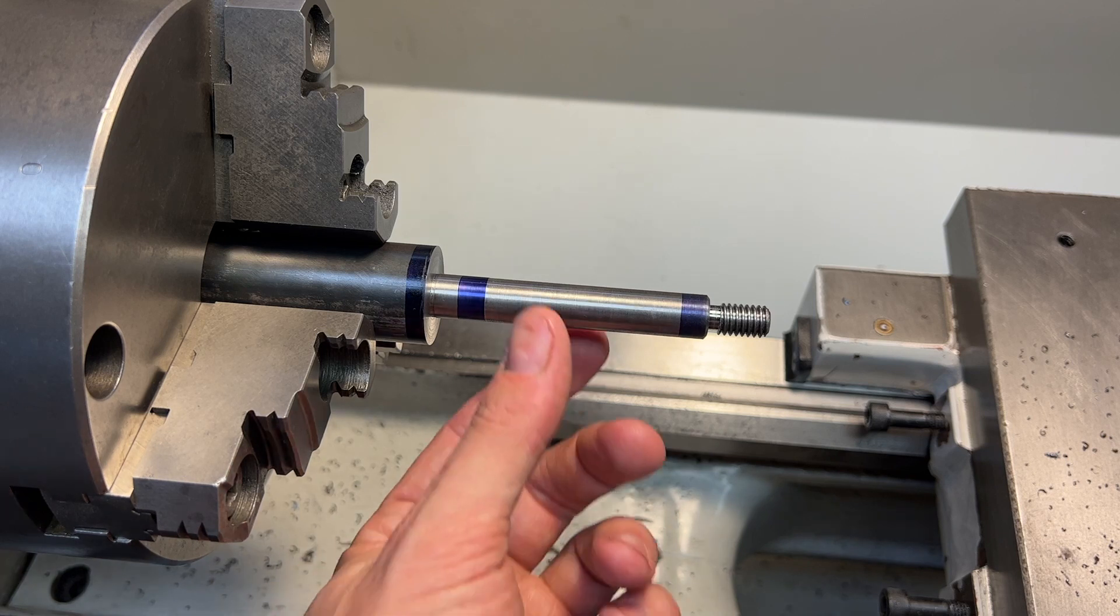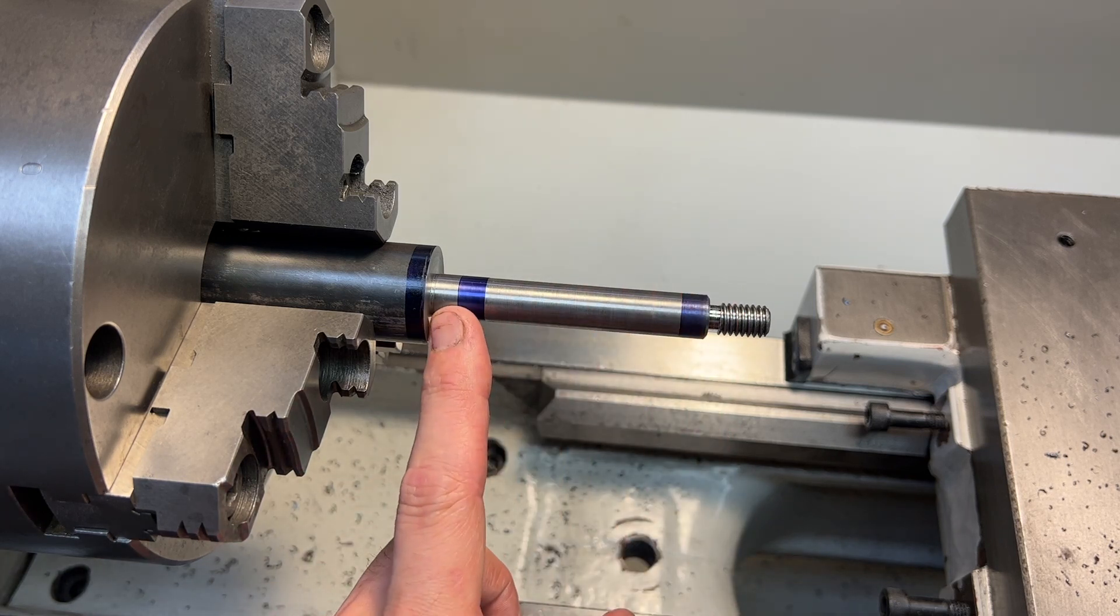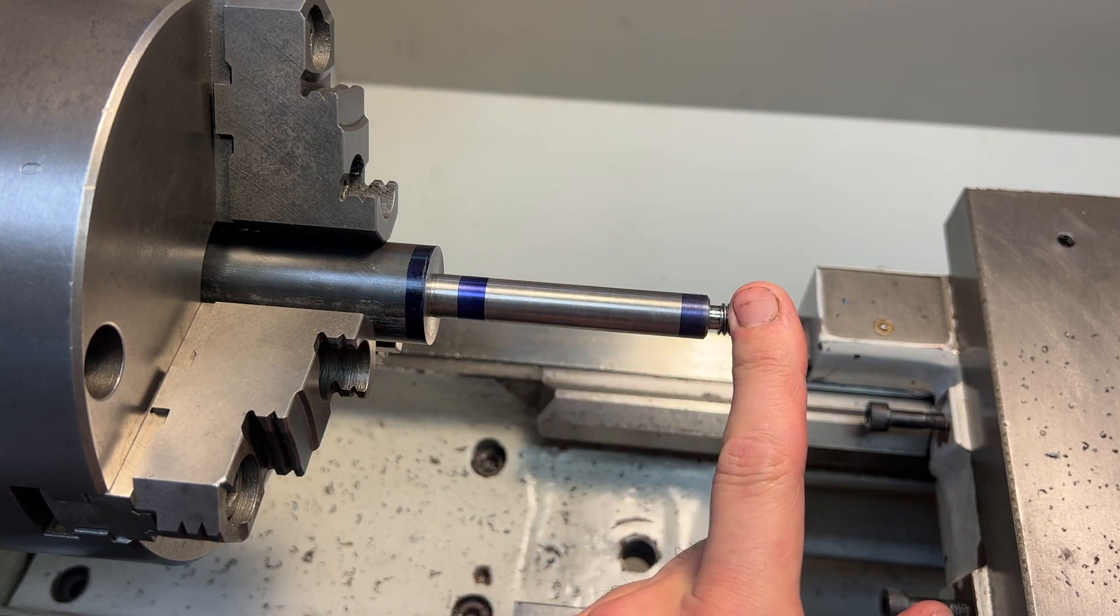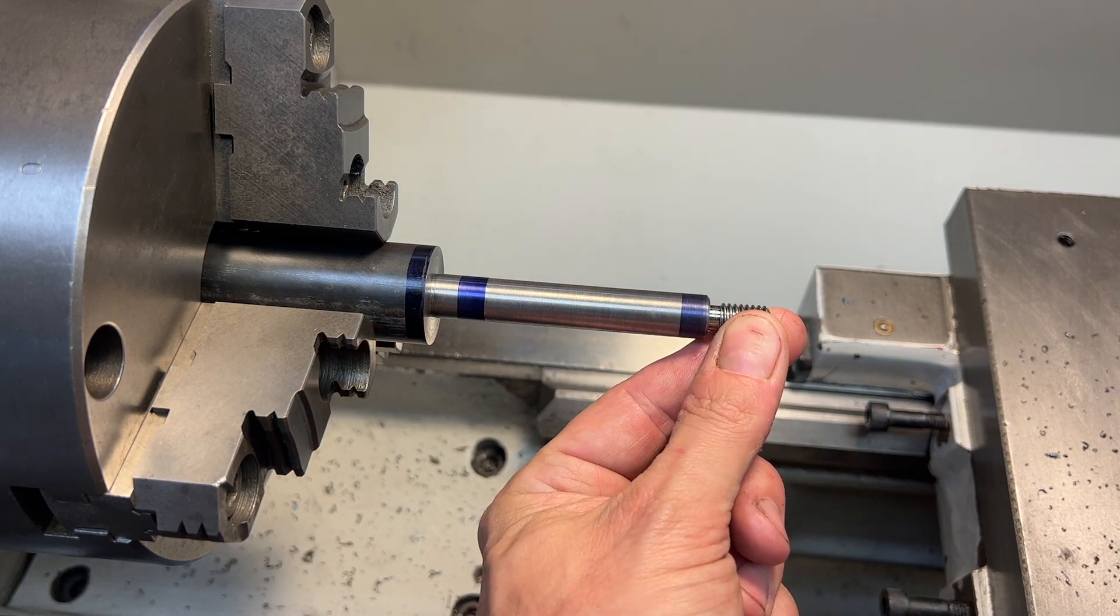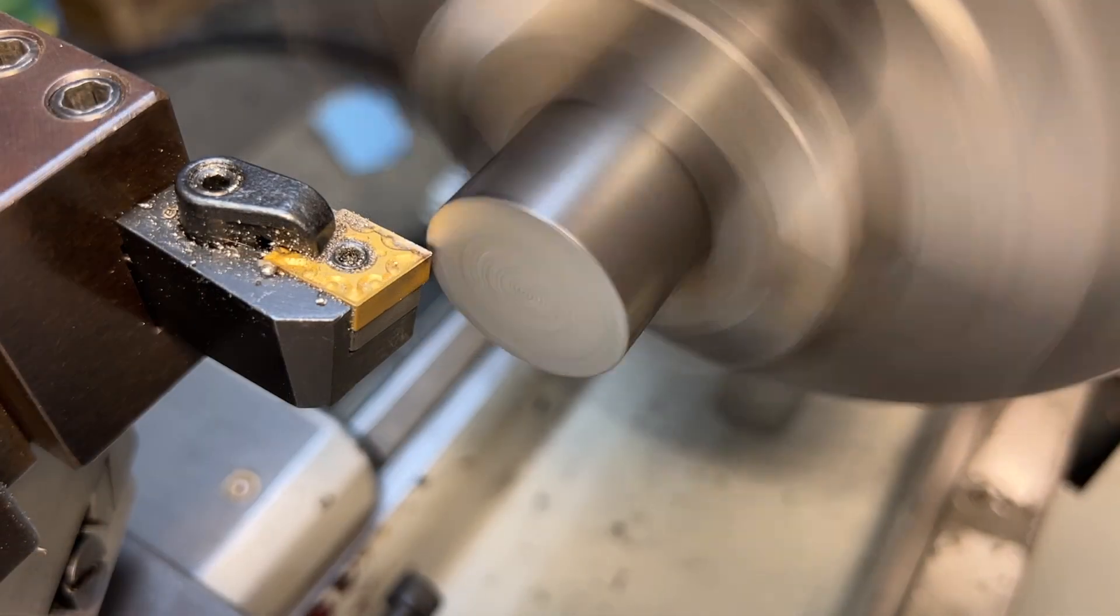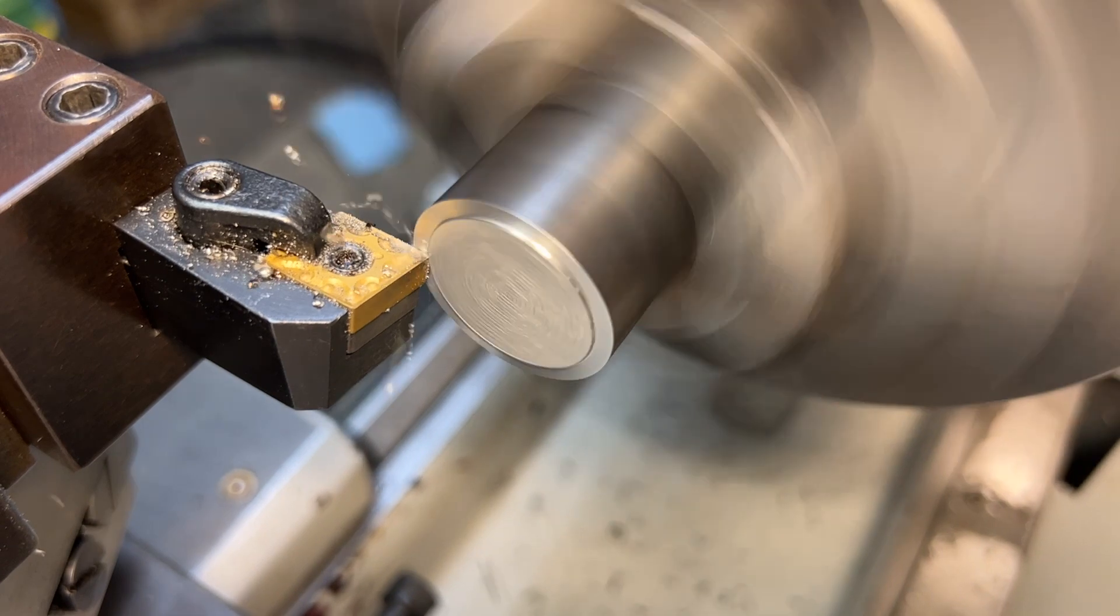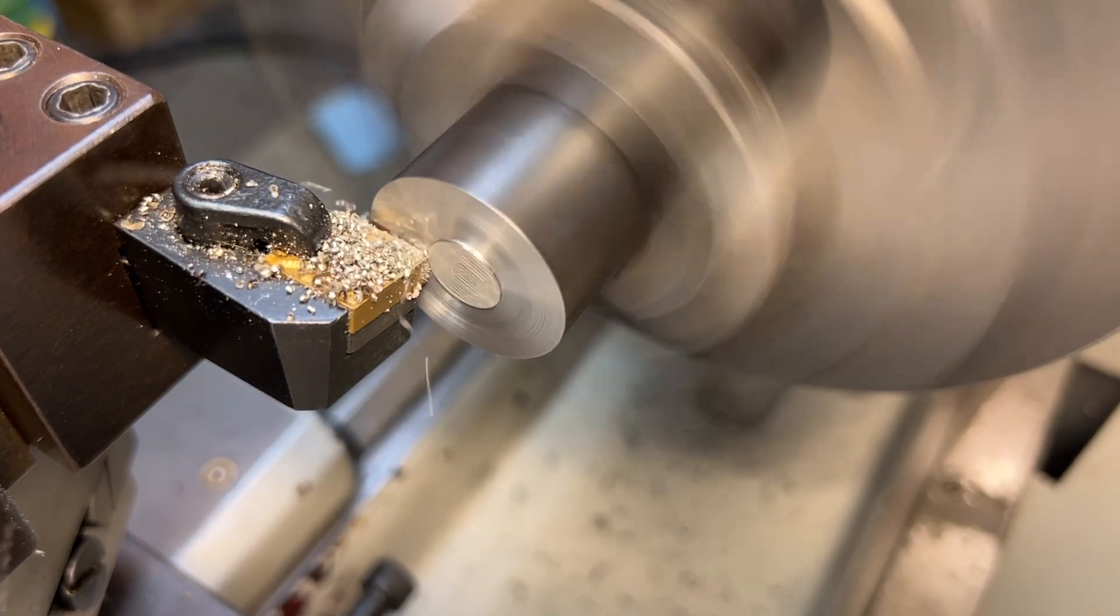We just relieved this shaft a couple thousandths behind this bearing surface a little bit to make it easier to slip the bearing on and then put a 3/8-16 thread on the end here. I have just flipped the part around in the three-jaw chuck and we are facing and drilling a center in the other end.